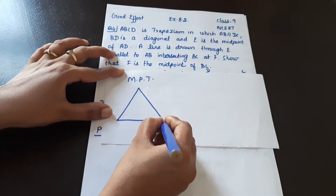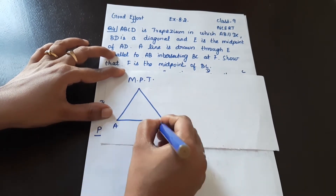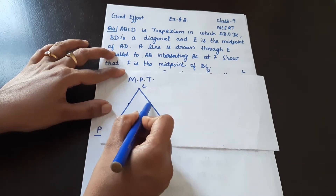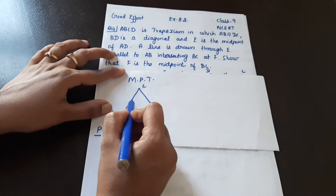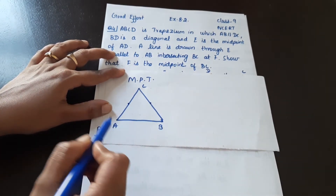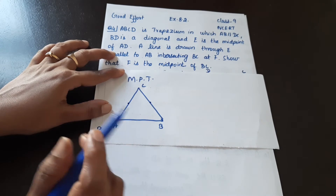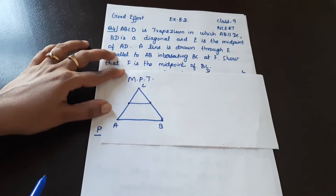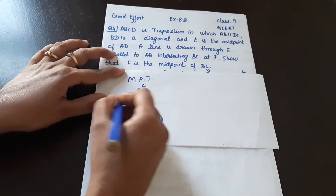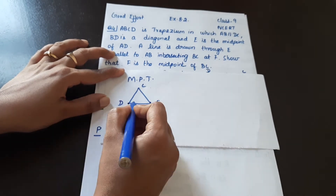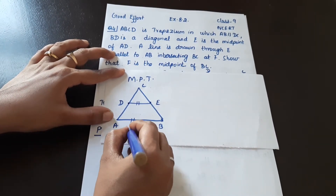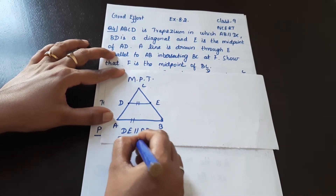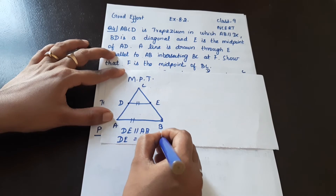Draw a triangle ABC. This side has one midpoint and this side has one midpoint — so the triangle has two midpoints. Join the two midpoints. Then DE is parallel to AB, and DE is equal to half of AB. This is the midpoint theorem.